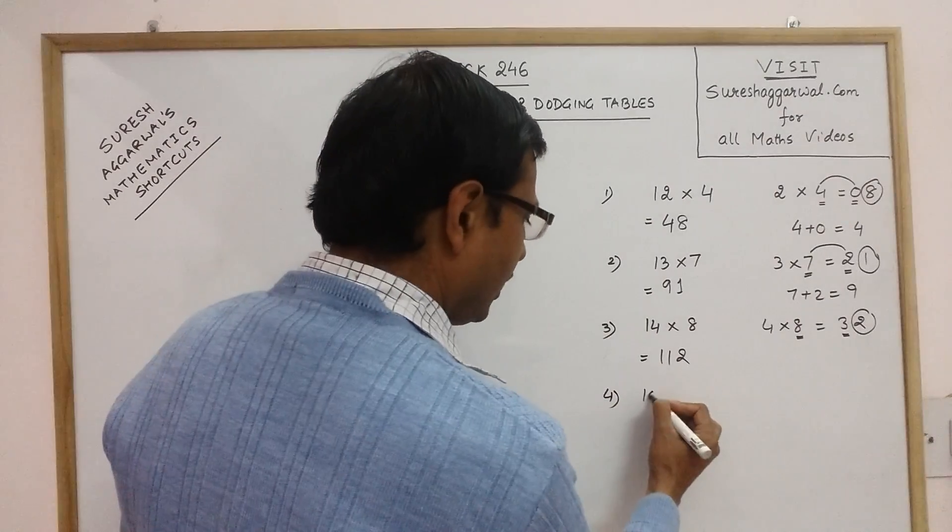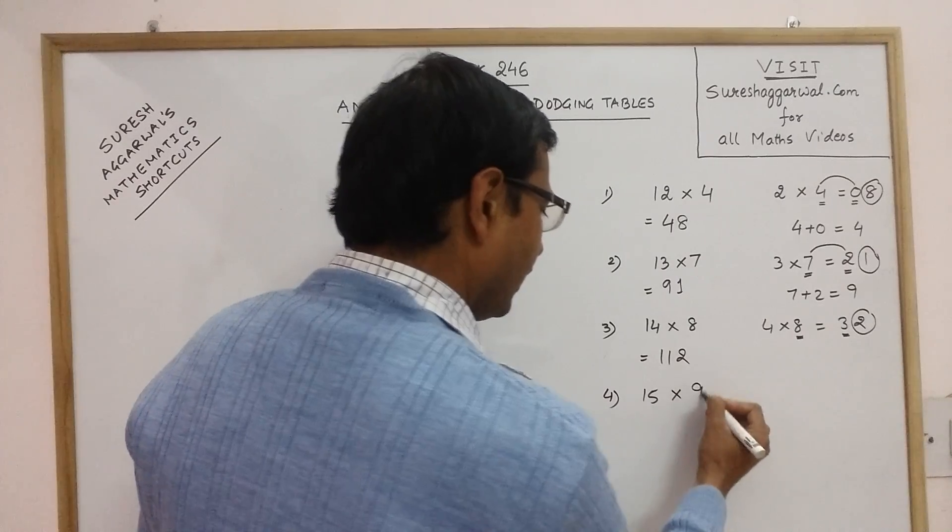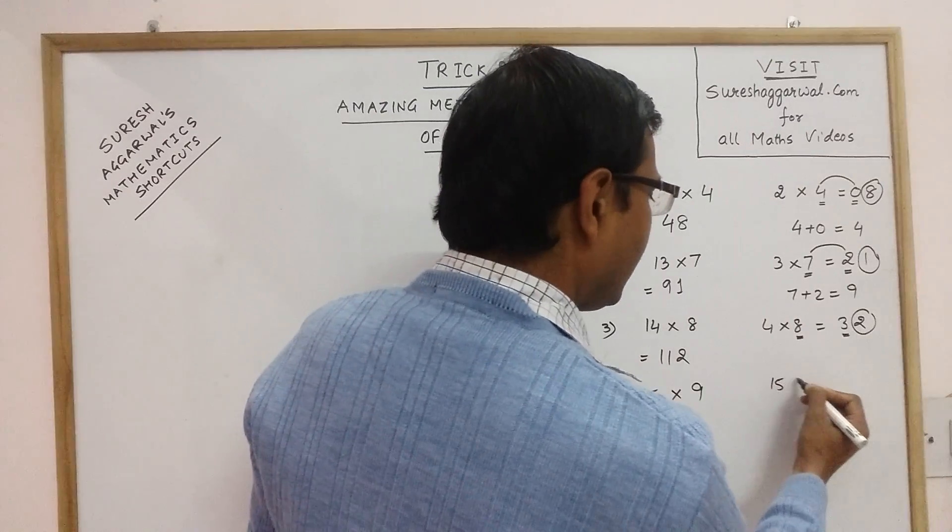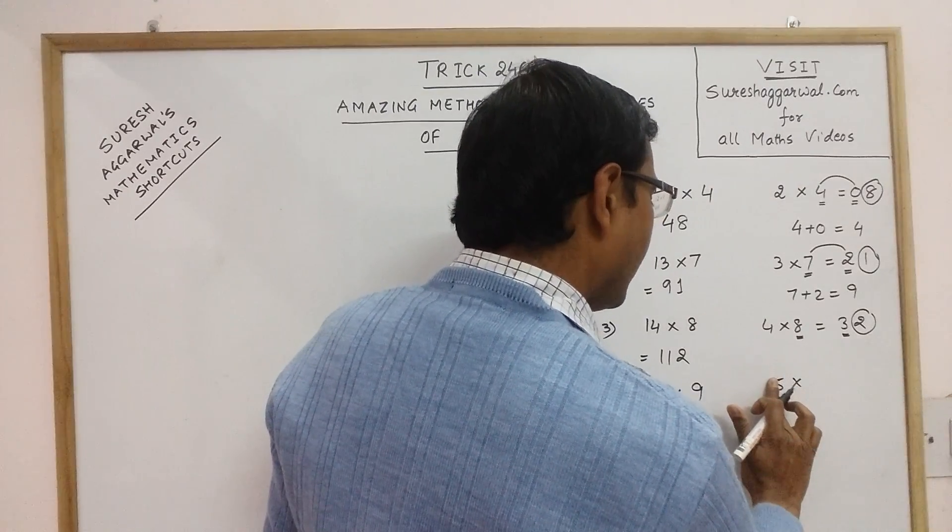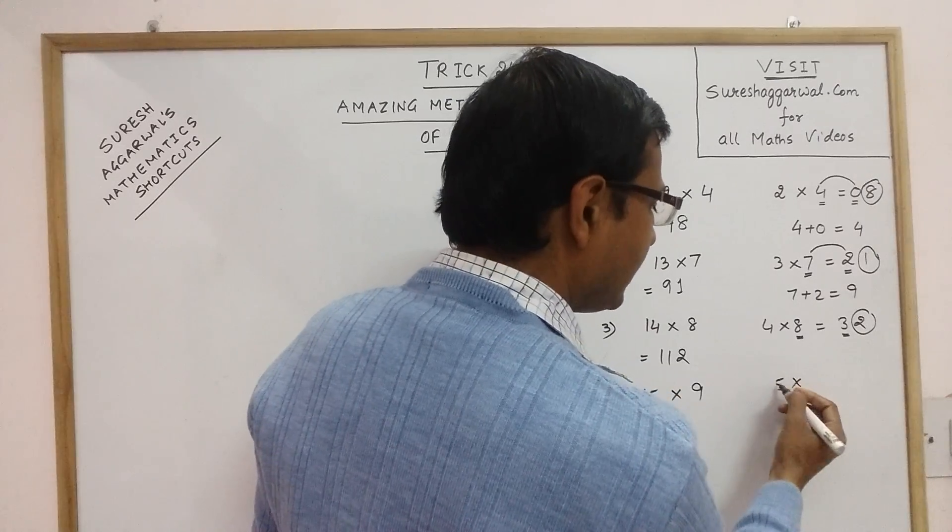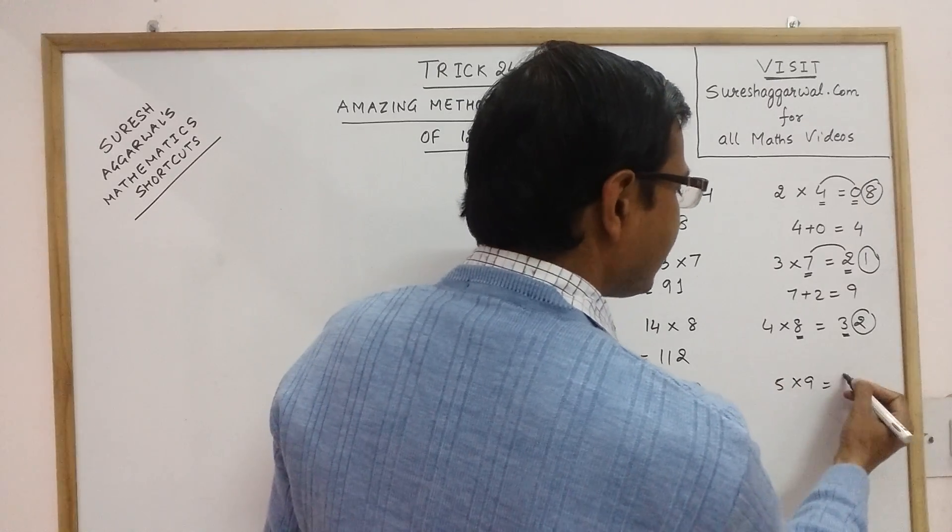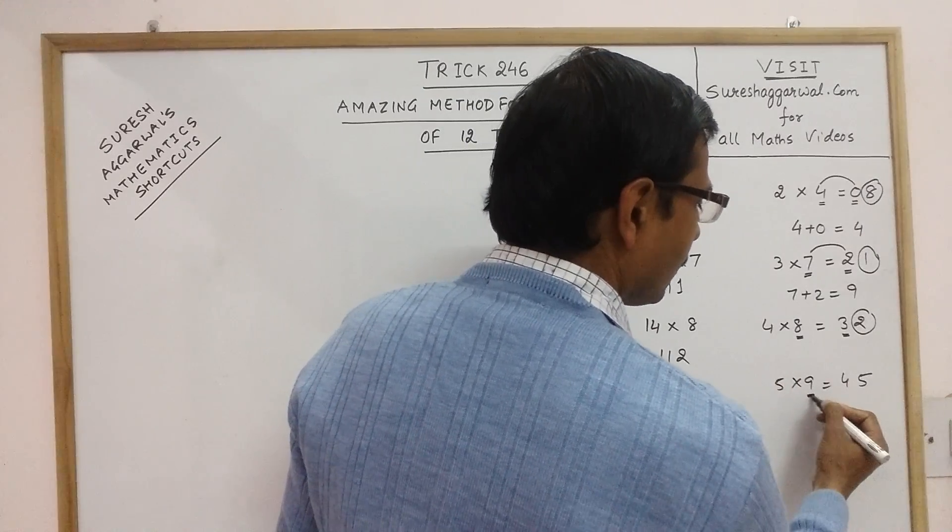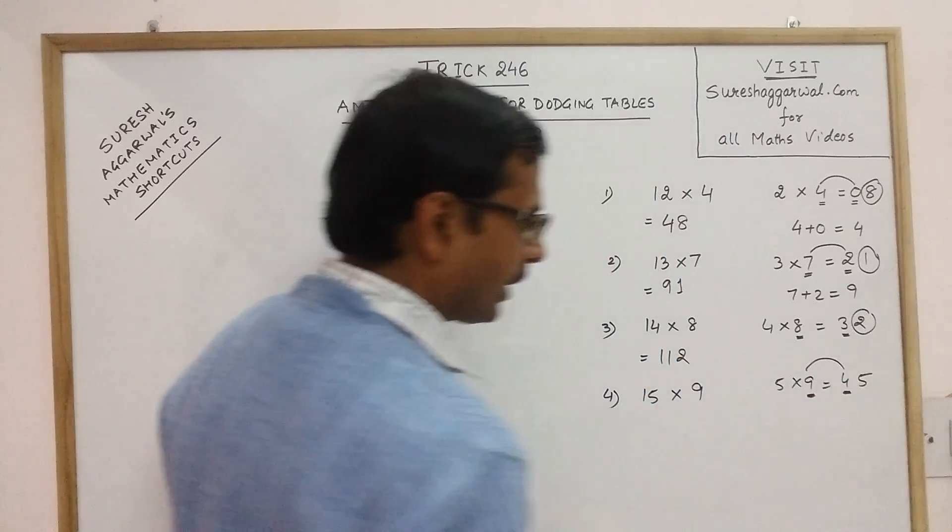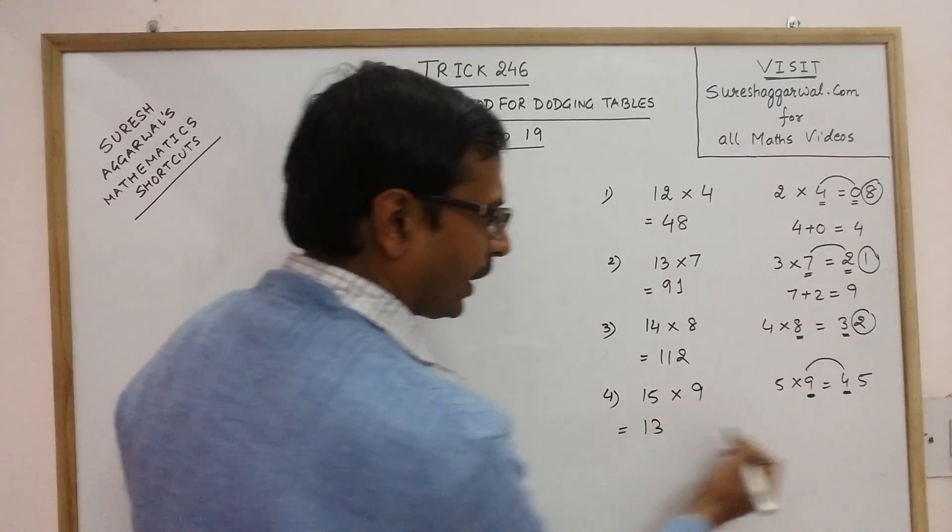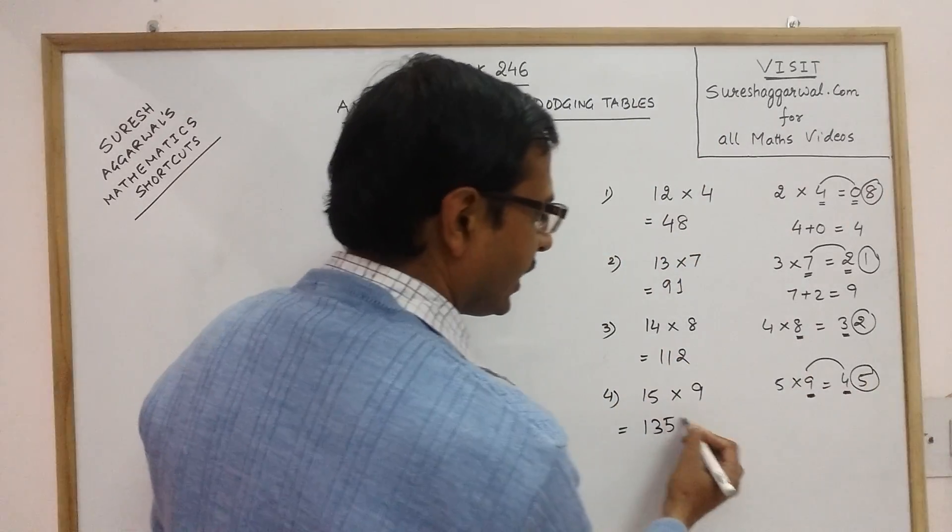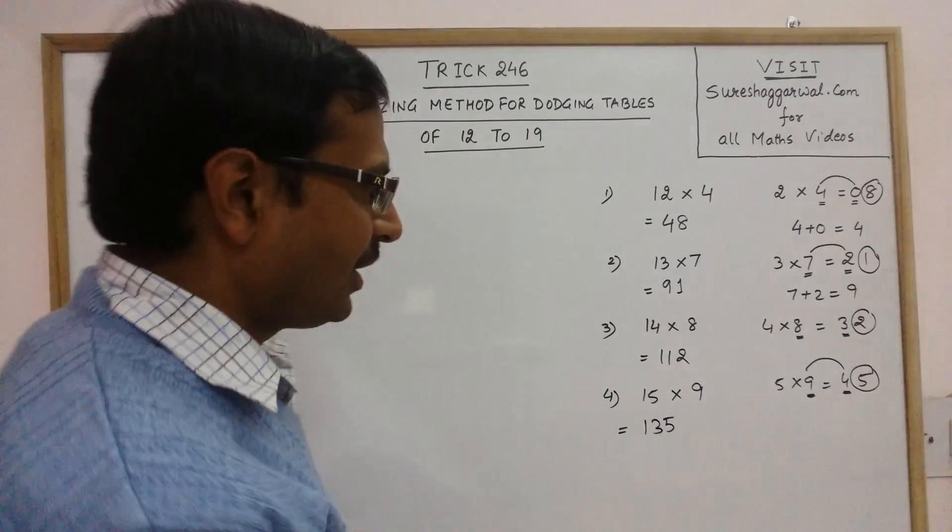Let us practice this method more. Say we have 15 into 9. We don't write 15 into 9. We write just 5 into 9. What is 5 into 9? 45. So what are the intermediate terms? 9 and 4. 9 plus 4 is 13. And what is the last term? 5. So 135 is the required product.